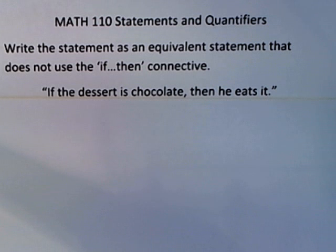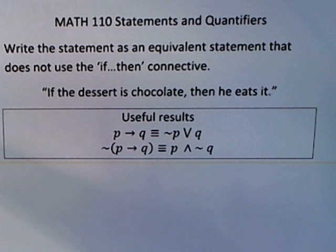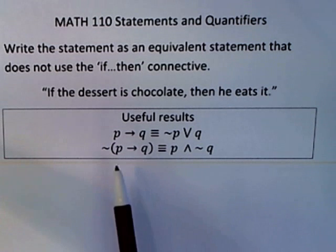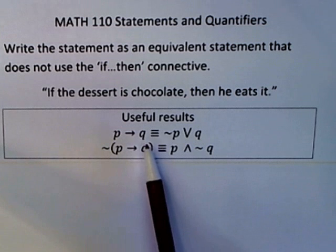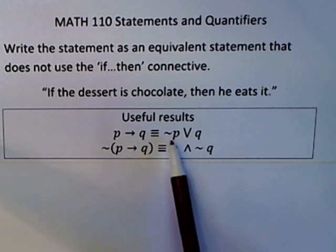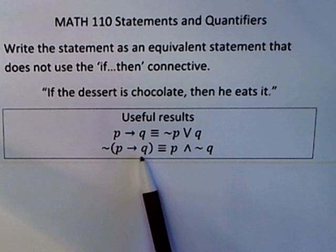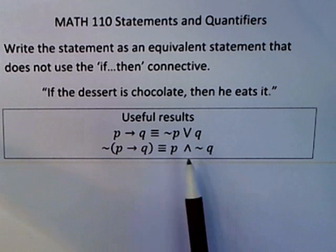Now you have to recall a result that we've already discussed. I label these useful results. We're actually not going to use both of them for this particular question, but they are results that tell you how to take an implication and rewrite it without the if-then, and it also tells you how you can take the negation of an implication and write it without the if-then.